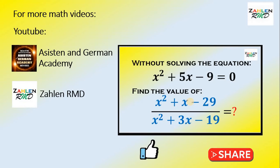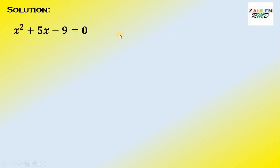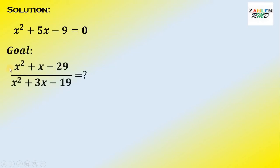Now let's start with the solution. We have the equation given which is x squared plus 5x minus 9 equals 0. And our goal is to find the value of x squared plus x minus 29 all over x squared plus 3x minus 19, without solving the equation x squared plus 5x minus 9 equals 0.